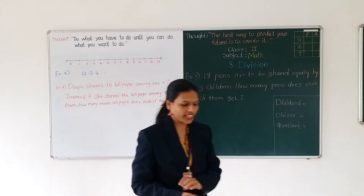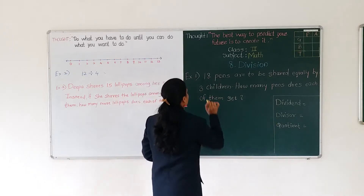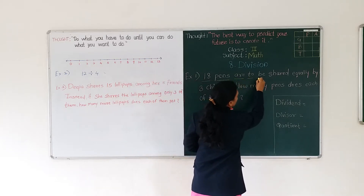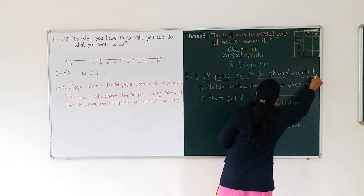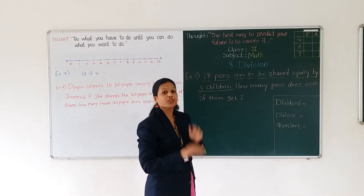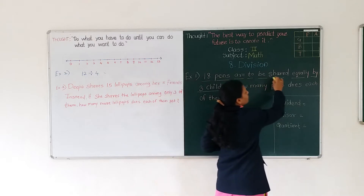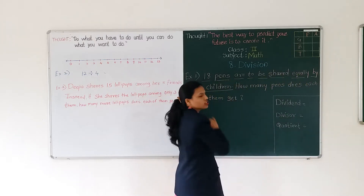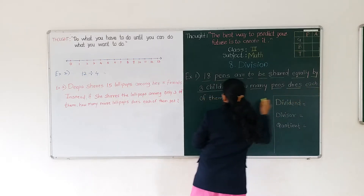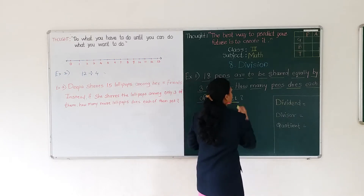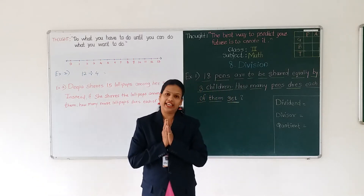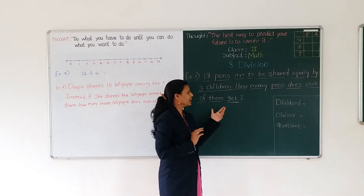Example number 1. What is example number 1? 18 fans are to be shared equally by 3 children. How many fans? 18 fans are to be shared equally by 3 children. Then what is the question? How many fans does each of them get? So here we have a Division problem.